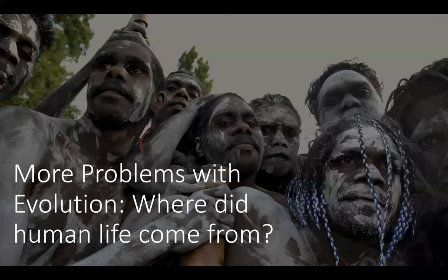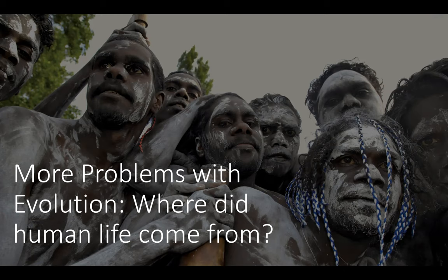And there are more problems with evolution. One of these problems is the question: where did human life come from? Earlier we asked where did the universe come from, and where did life come from, and now we're asking where did human life come from. Some evolutionists would say we came from Neanderthals, who came from Cro-Magnons, who came from earlier hominids. But what proof do we have that humans really did evolve from Neanderthals, Cro-Magnons, and earlier hominids?